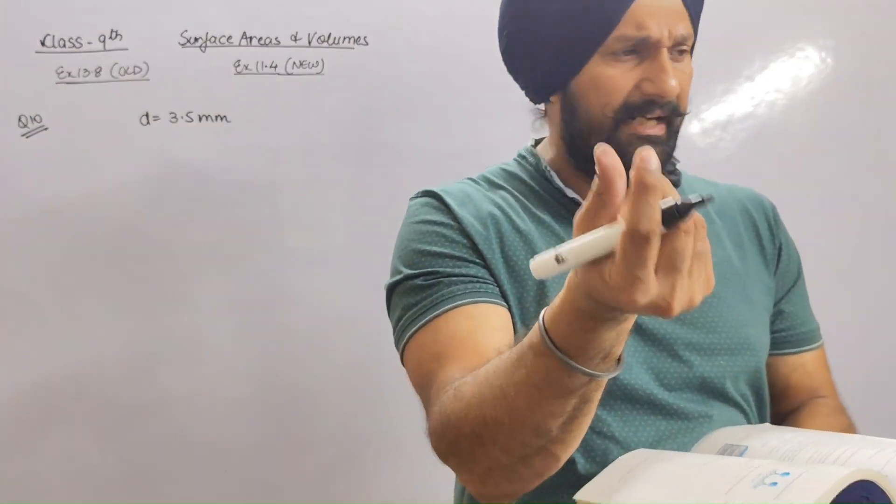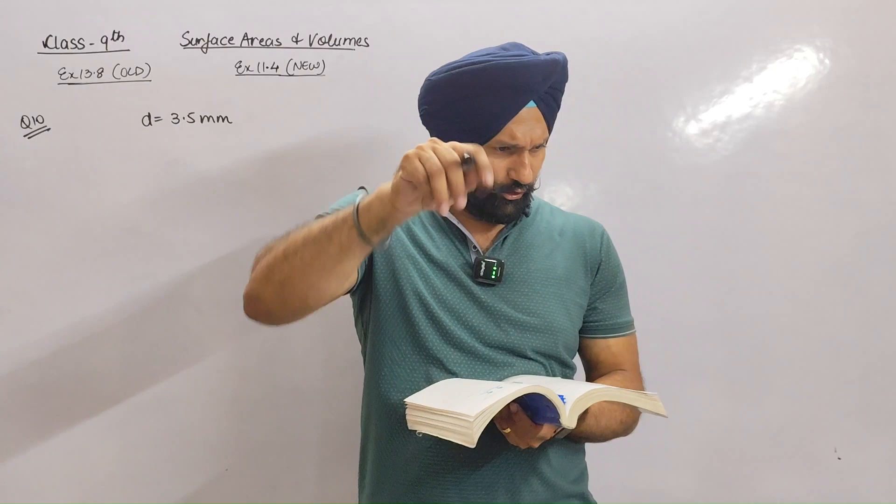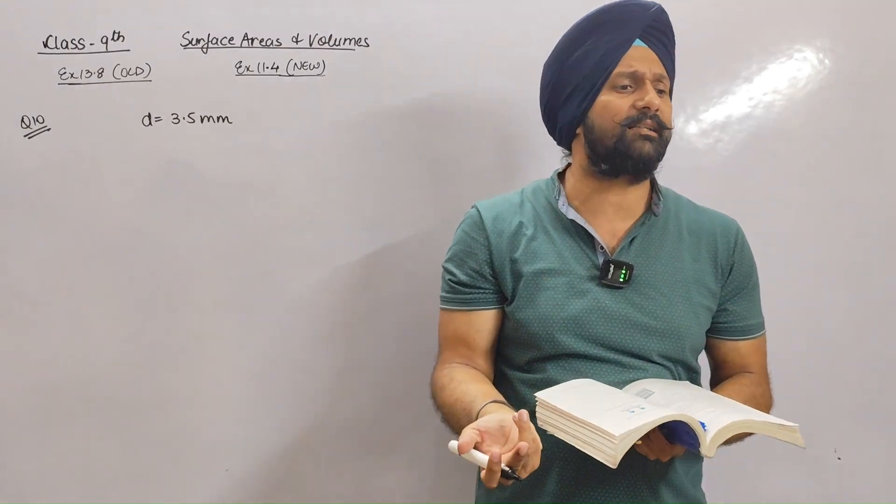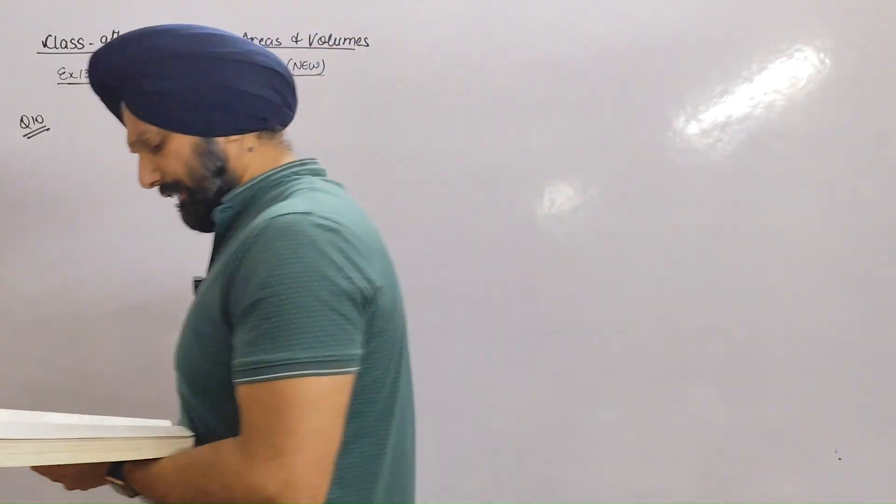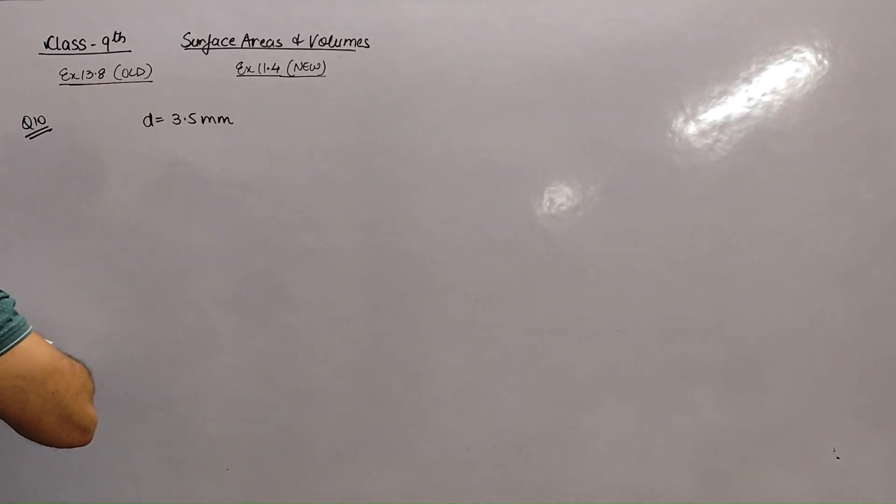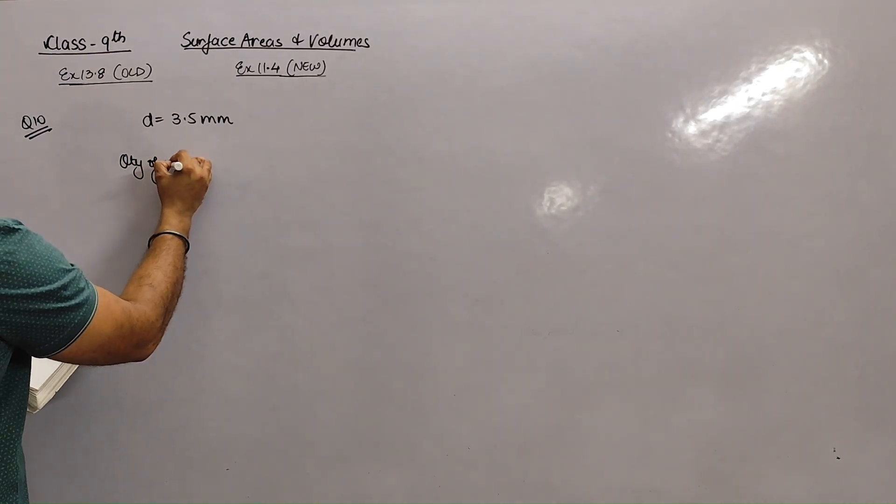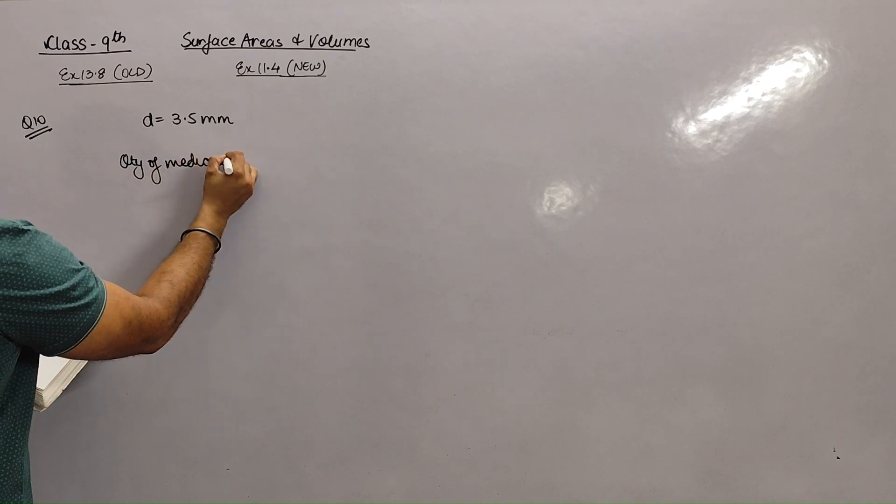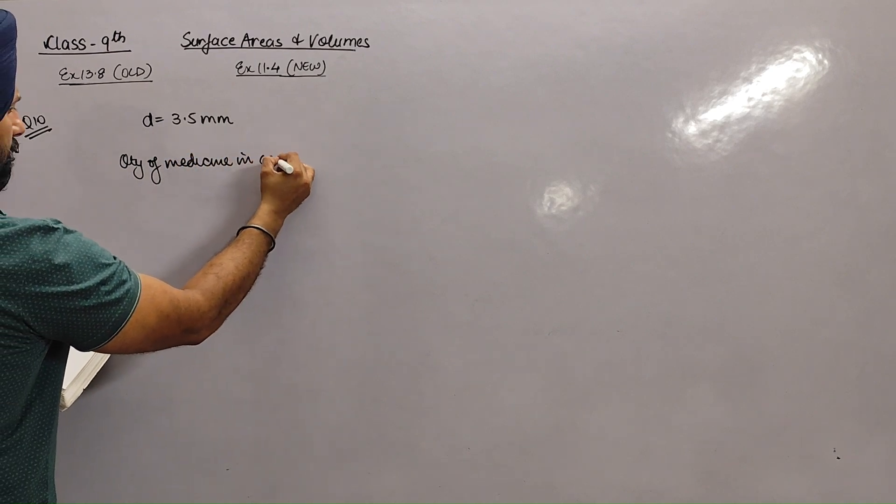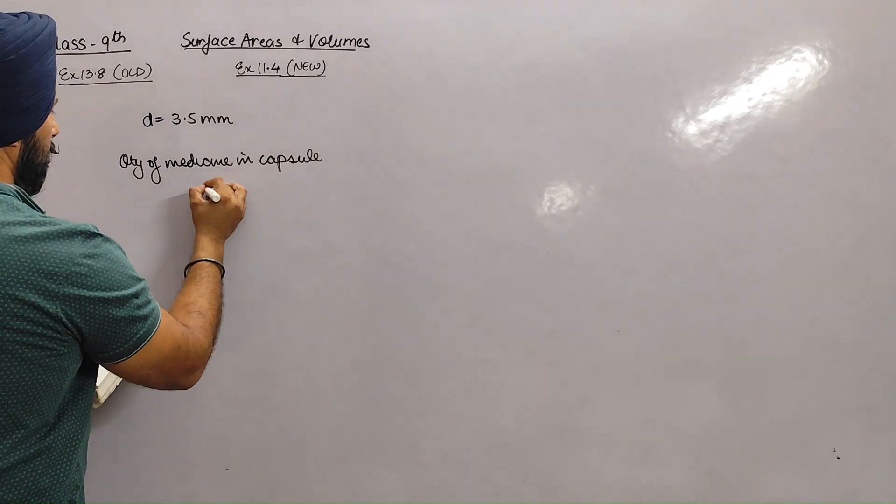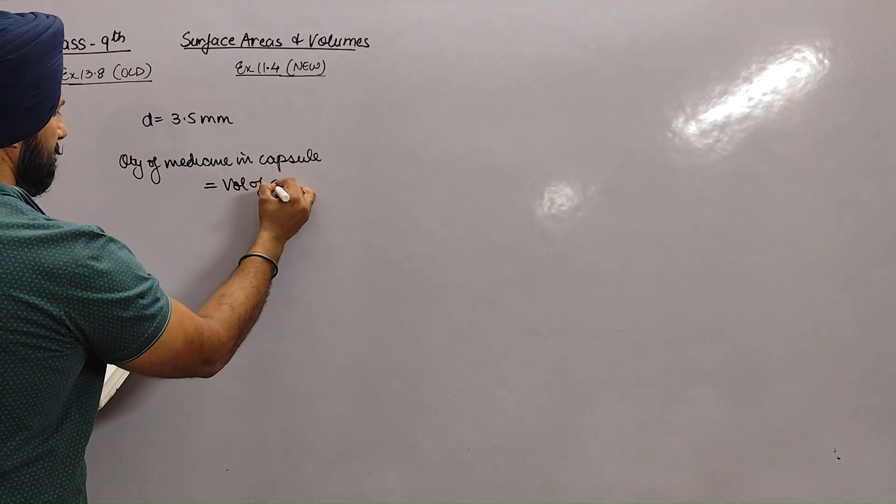You need to understand the capsule is in the middle. So quantity of medicine in capsule is equal to volume of sphere.